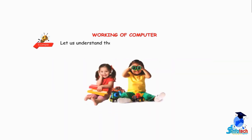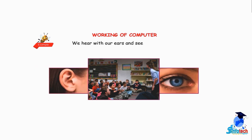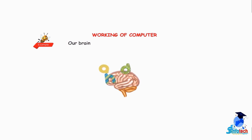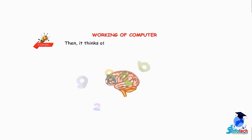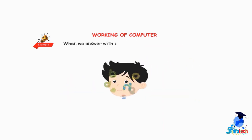Let us understand these steps using our body as an example. When a teacher asks us a question, we hear with our ears and see with our eyes — the ears and eyes are the input units. Our brain stores everything the teacher says, then thinks of an answer and orders us to speak, working like a processing unit. When we answer with our mouth, it works like an output unit.